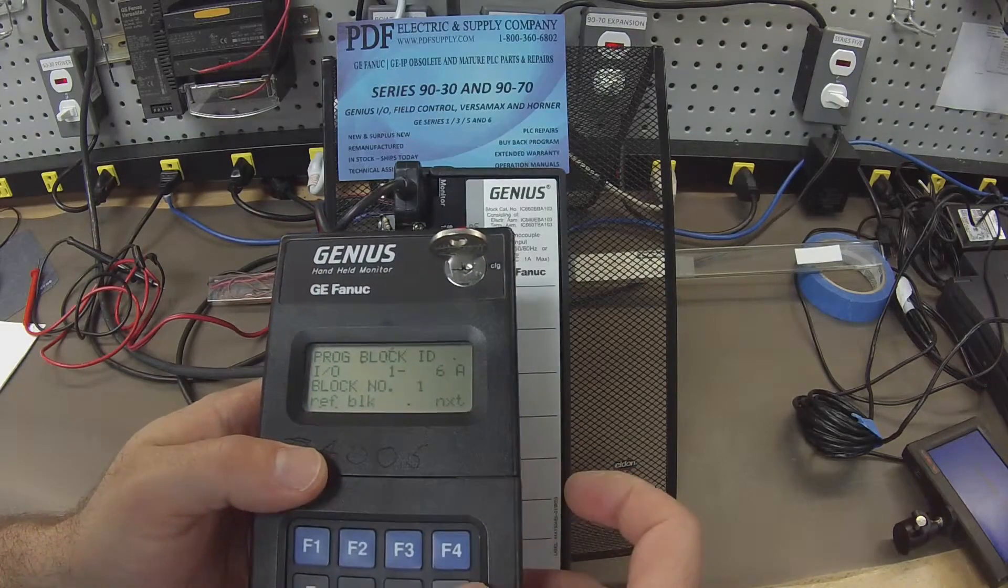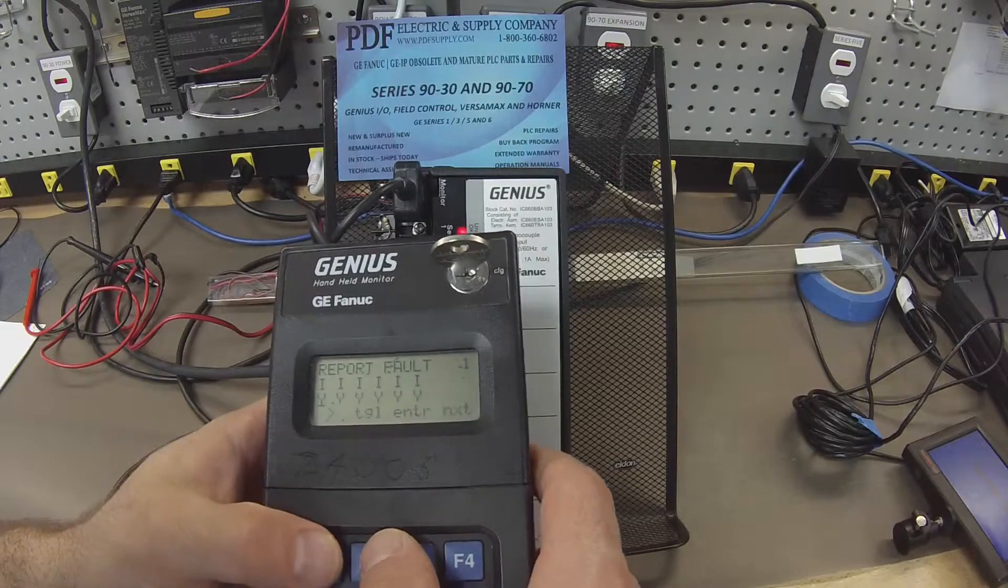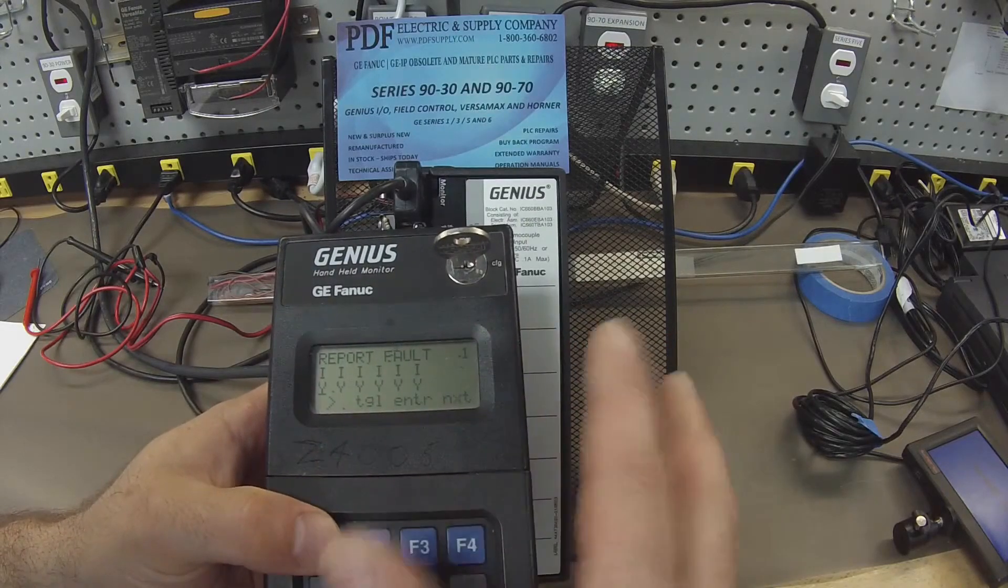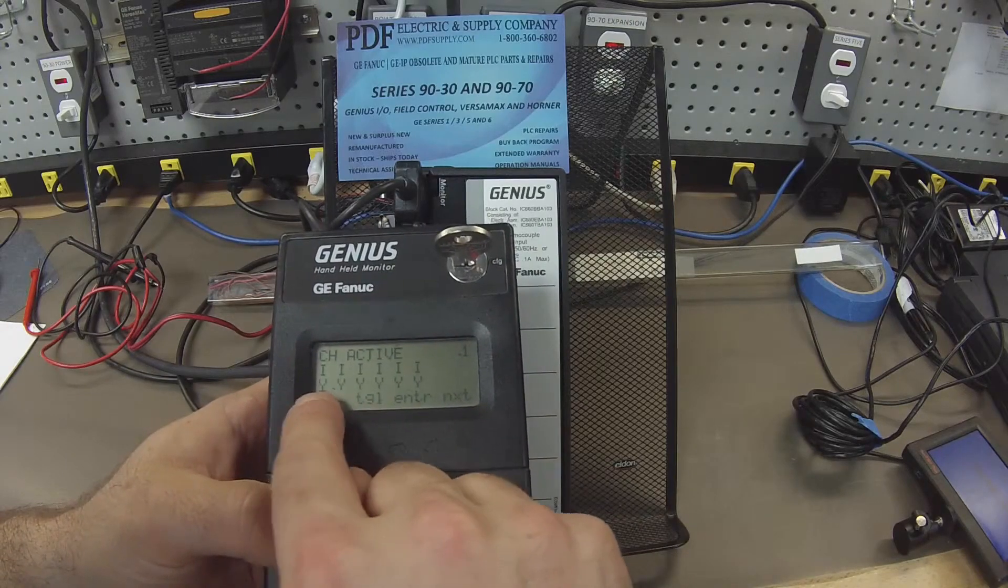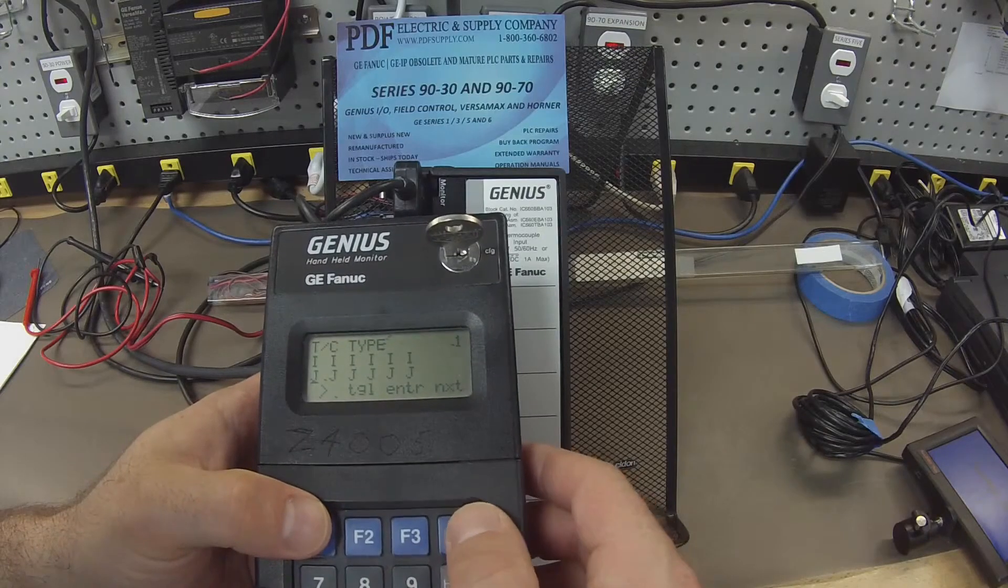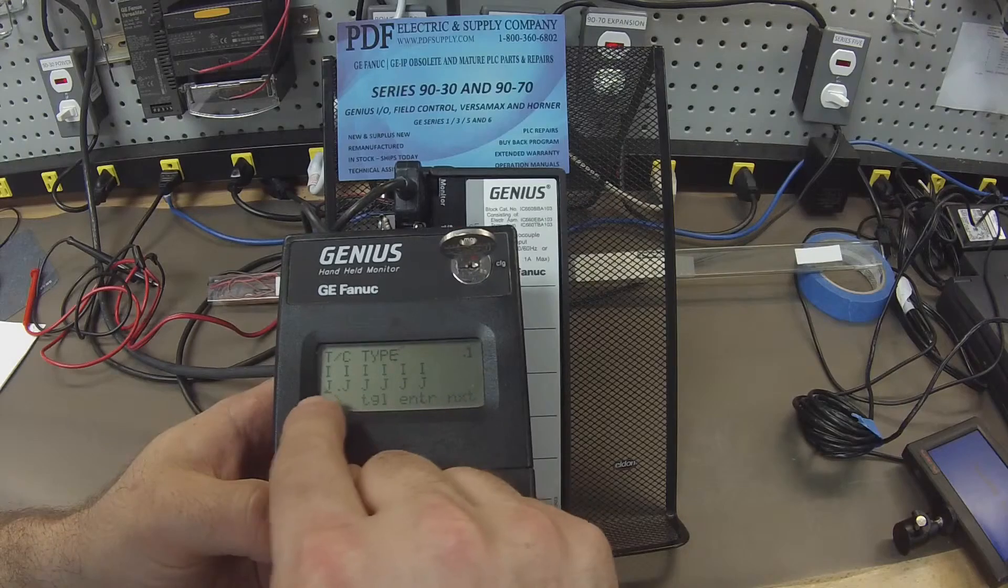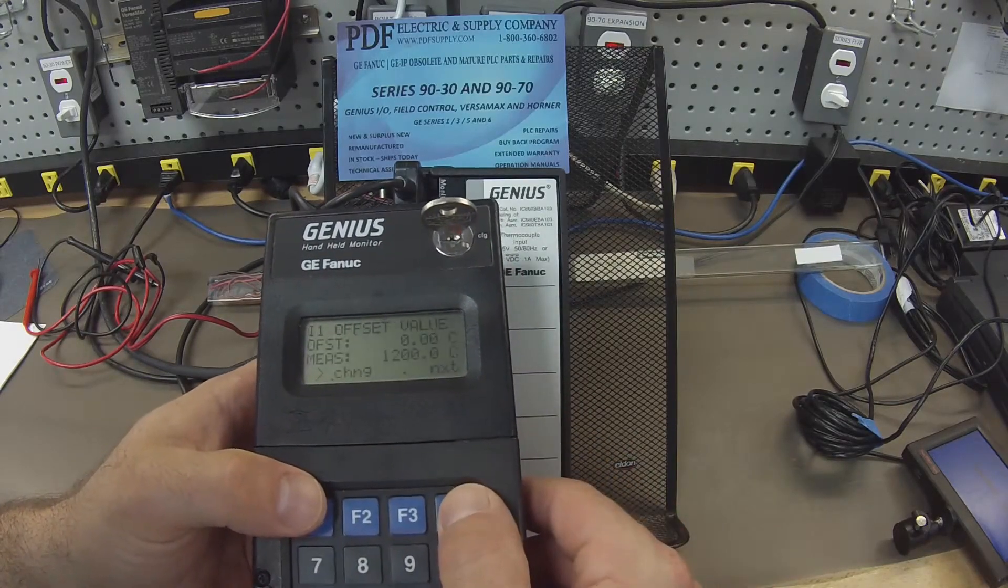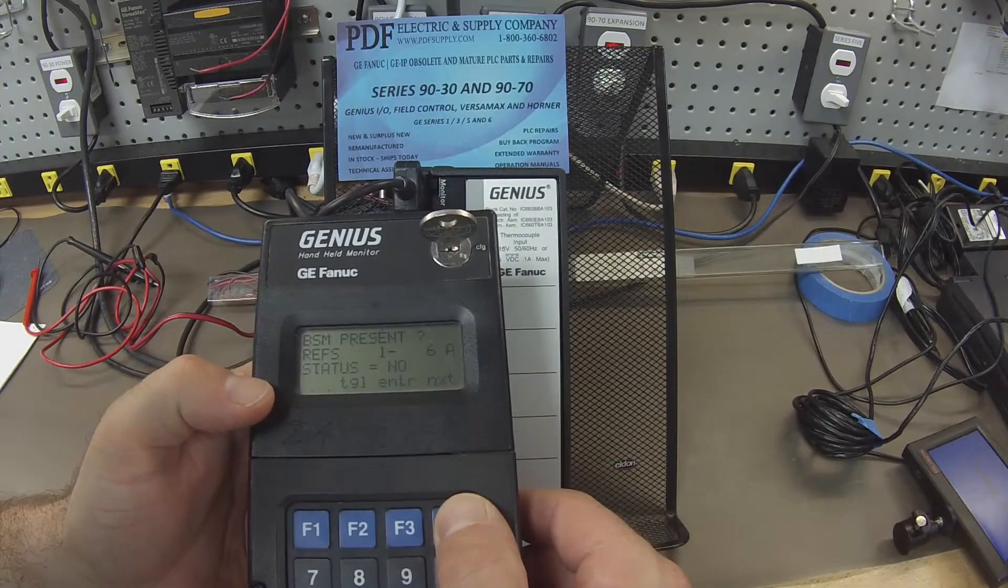Alright, and then I go back to home, F3 configuration, F2 configure block, and I have everything set to factory settings on the Genius block. You may have different settings, which is fine, but I do want to test every channel, so I have all these toggled for yes. The thermocouple I'm using, as I mentioned before, is type J, TC type J thermocouple, and those are all selected properly.